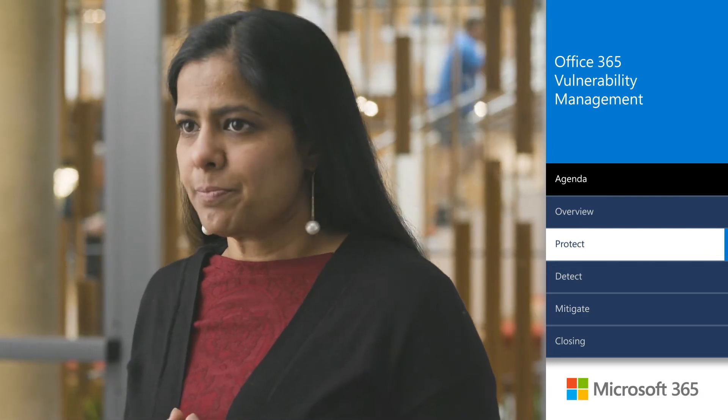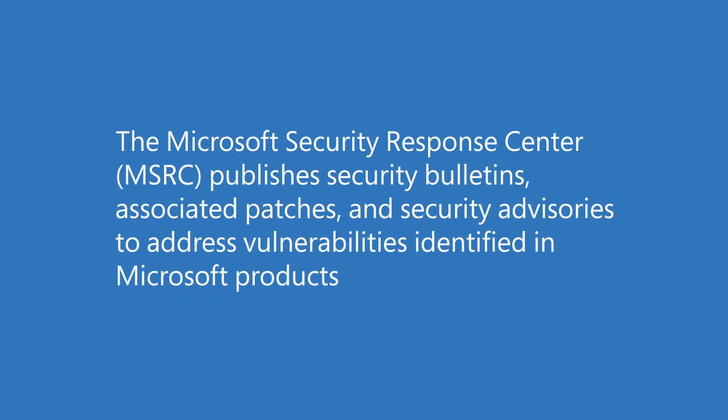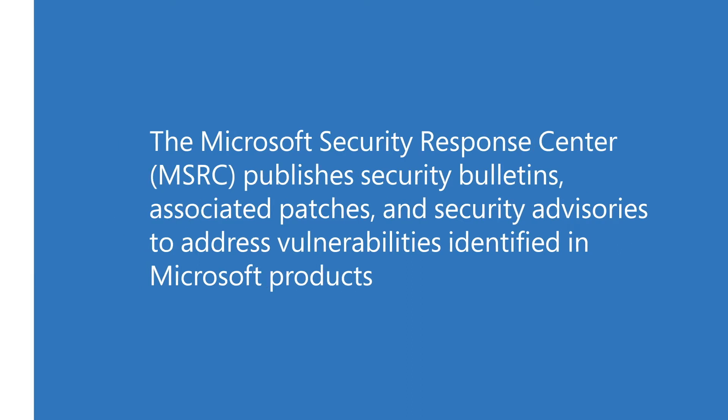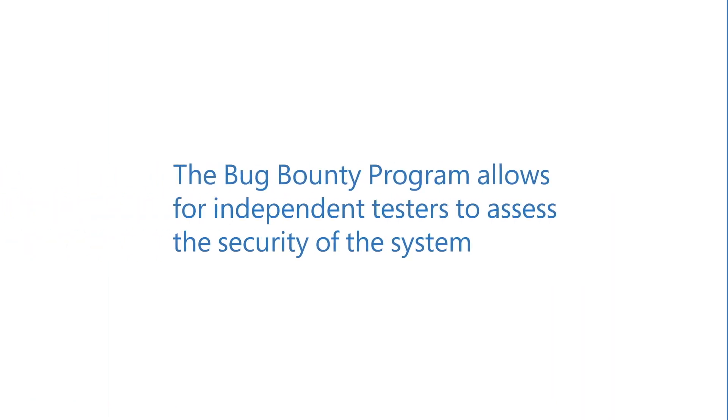Leveraging known vulnerability-related data from multiple external sources is critical to a strong protect phase. These include the Microsoft Security Response Center, or MSRC, which publishes security bulletins, associated patches, and security advisories to address vulnerabilities identified in Microsoft products. A bug bounty program allows independent testers to assess the security of the system, identify vulnerabilities, and share them with Microsoft for a bounty, enabling Microsoft to mitigate these vulnerabilities ahead of hackers leveraging them.